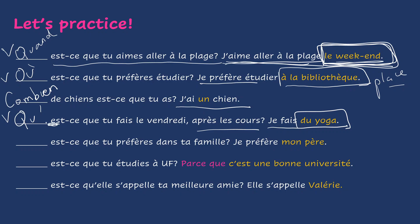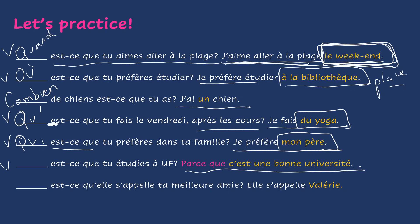Qu'est-ce que tu fais le vendredi après les cours? Here, je préfère mon père. I prefer my father. How would you say: whom do you prefer in your family? You are going to use qui. Qui est-ce que tu préfères dans ta famille? Here: parce que c'est une bonne université — because it's a good university. The question word is pourquoi. Pourquoi est-ce que tu étudies à UF?